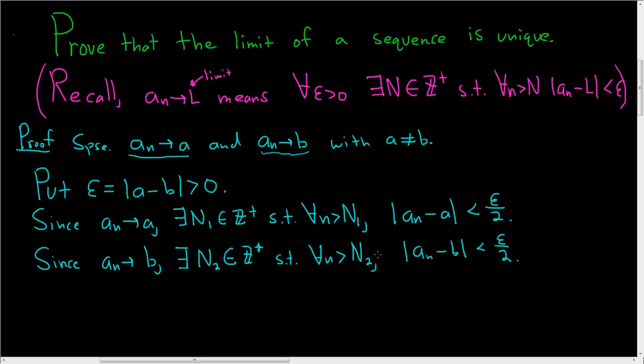And so we want both conditions to be true in order to try to reach a contradiction. So what we'll do is we'll take the maximum of N1 and N2. So set capital M to be the maximum of N1 and N2. And so then what we'll do is we'll look at a minus b.